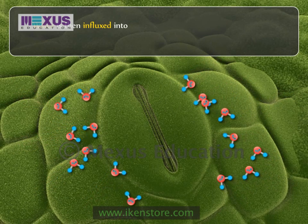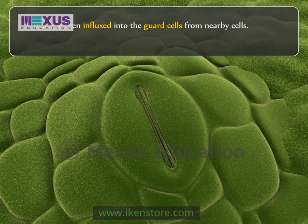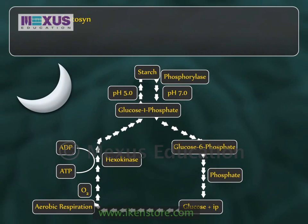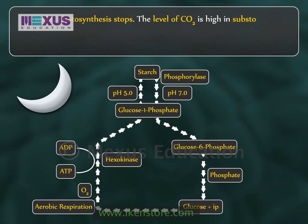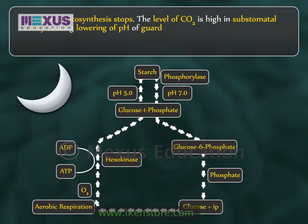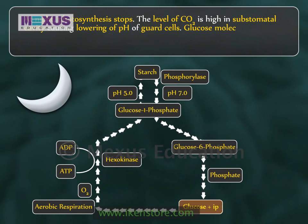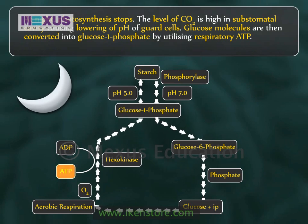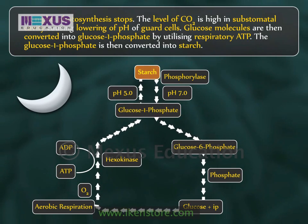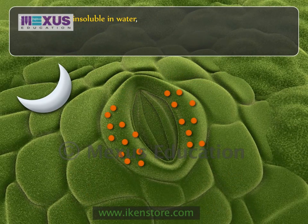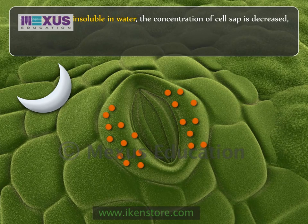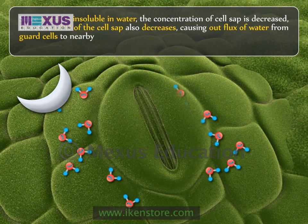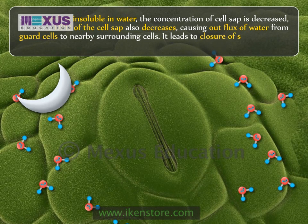Water is then influxed into the guard cells from nearby cells. Guard cells become turgid, causing opening of the stomata. At night, photosynthesis stops and the level of CO2 is high in the sub-stomatal cavity, which results in the lowering of pH of guard cells. Glucose molecules are then converted into glucose 1-phosphate by utilising respiratory ATP. The glucose 1-phosphate is then converted into starch. Since starch is insoluble in water, the concentration of cell sap is decreased, therefore DPD of the cell sap also decreases, causing outflux of water from guard cells to nearby surrounding cells and leading to closure of the stomata at night.